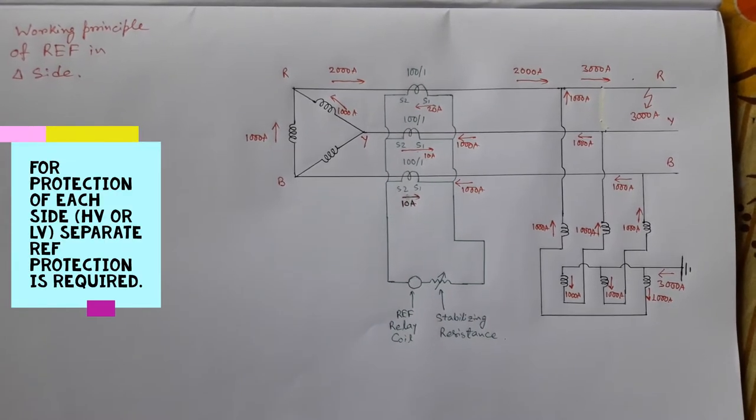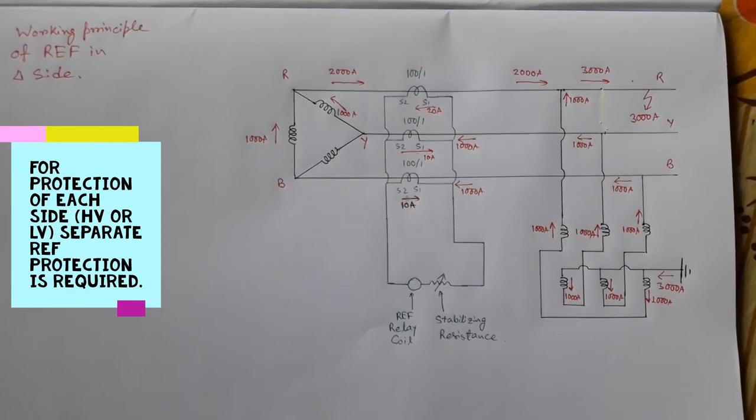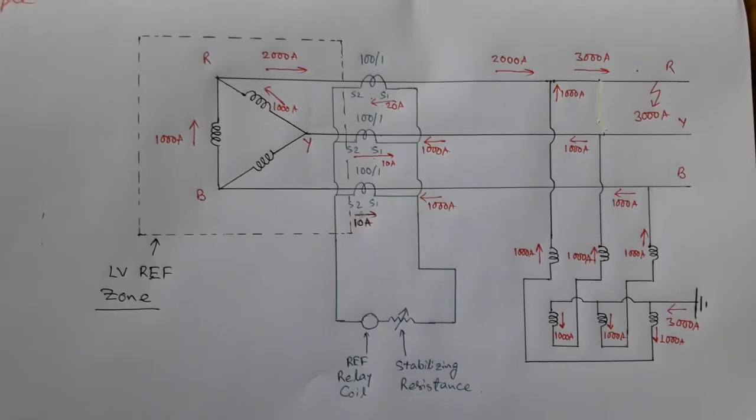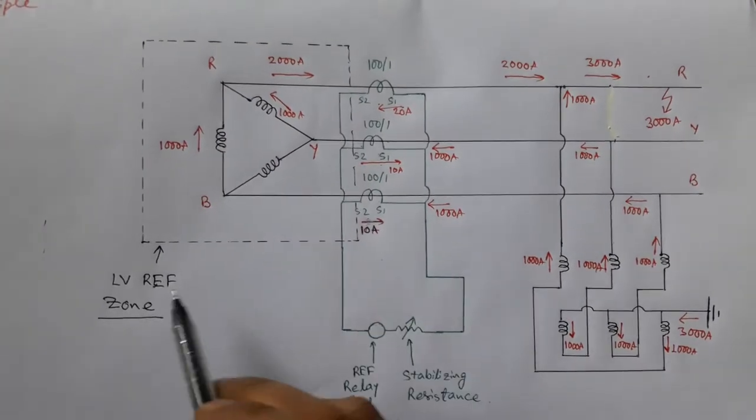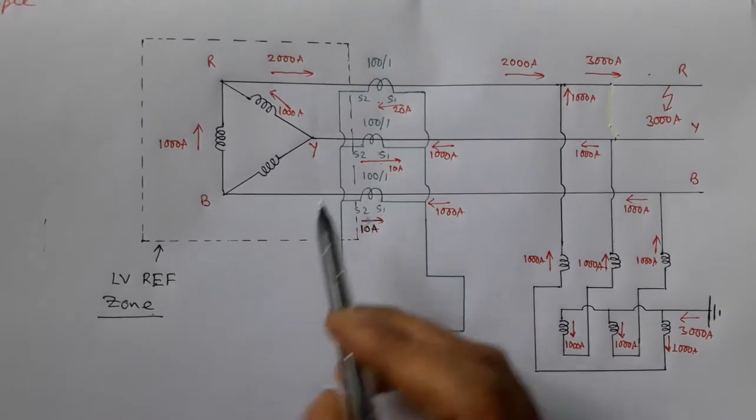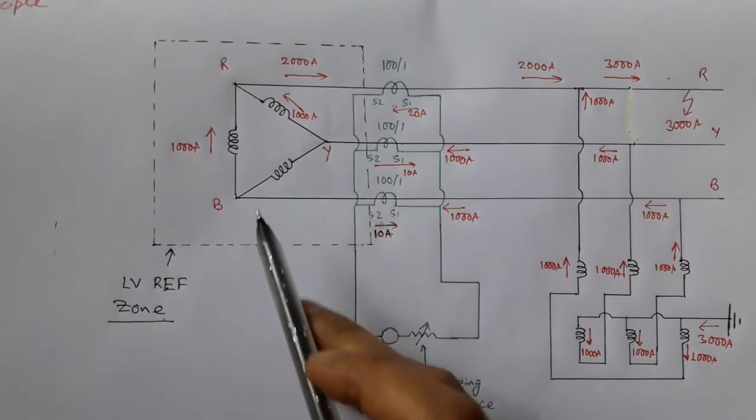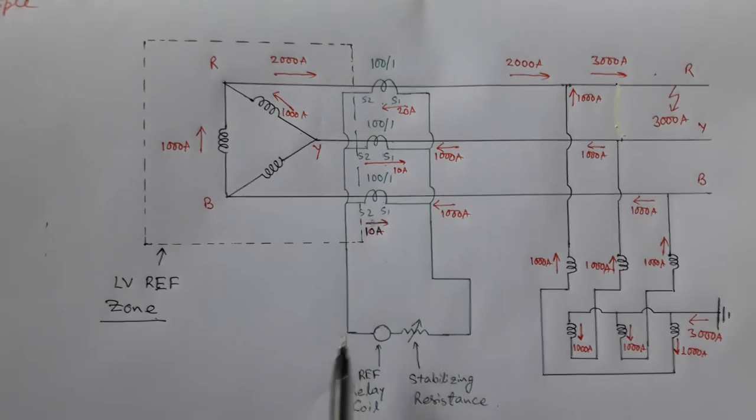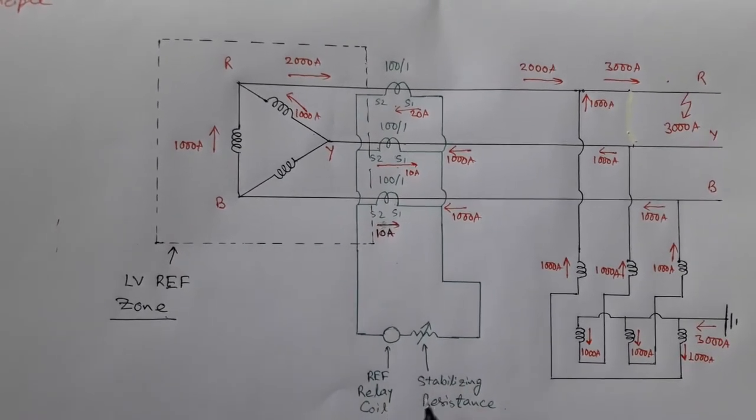In this video we will discuss how a REF relay can protect the delta side of a power transformer. In this diagram, this dotted line represents the restricted earth fault zone. That means if any fault appears in this restricted zone, then that fault will be cleared instantaneously by operation of the restricted earth fault relay.